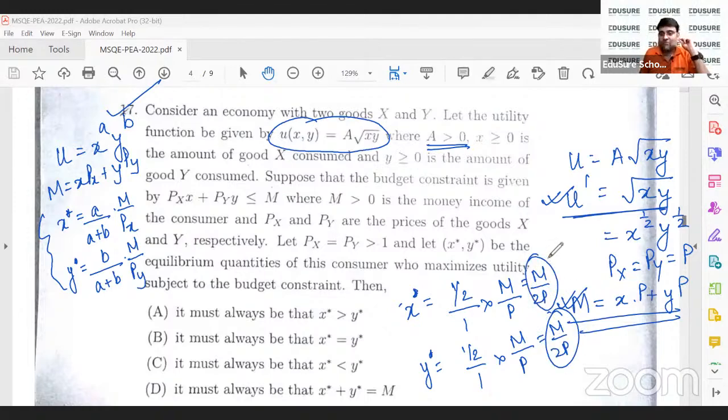So both x and y values are m by 2p. So what is the equilibrium quantity that will maximize the utility of the consumer? m by 2p for x and m by 2p for y. Doesn't come more simpler than that.